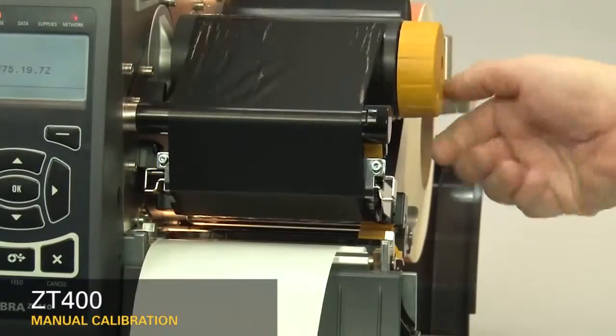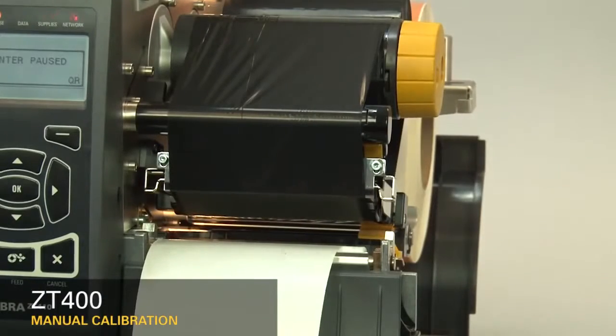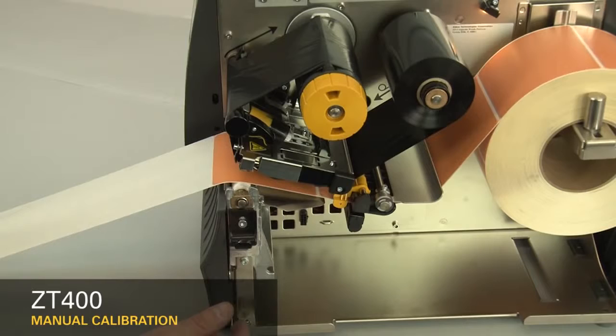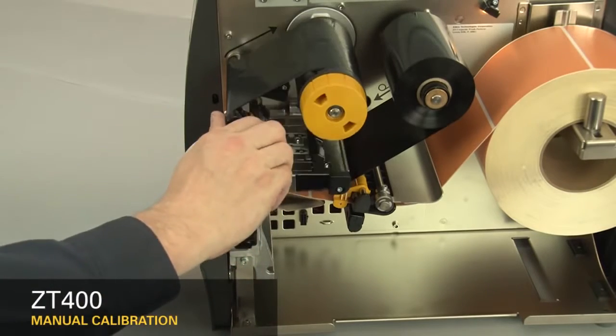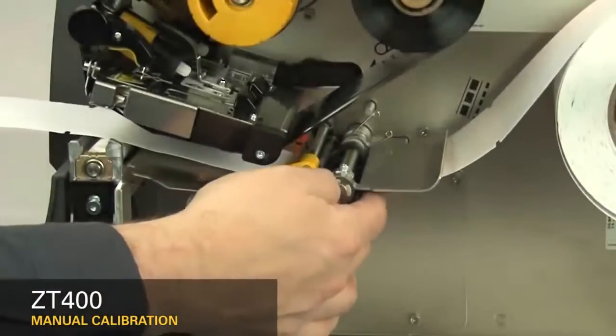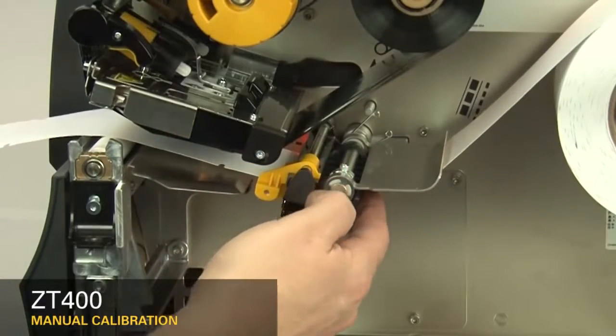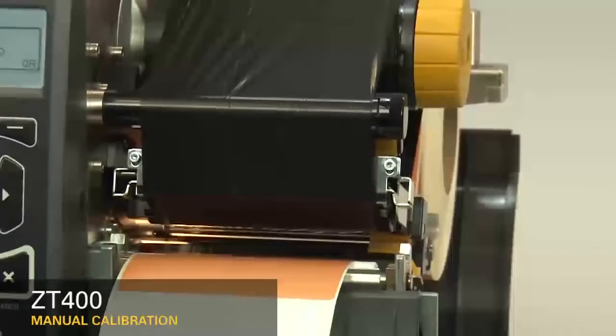If your media has a gap, hole or notch, be sure that the media and not the gap or hole or notch is under the media sensor. If your media has a black mark, the black mark position does not matter. Be sure that the media is installed correctly. When you've reloaded the supplies, close the printhead and press the pause button to continue.